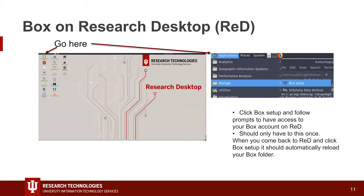Once you get on Research Desktop, you're going to go to Applications in the top left, then down to Storage Box Setup — double-click on that. For the very first time, you're going to have to sign into Box using your IU username and passphrase. But once you do it one time, all you have to do every time you come on is go and do Box Setup. When you double-click it, it will mount to your Research Desktop. You'll have to do it every time, but you won't have to sign into Box again — it'll keep that information. Your Box folder will pop up on the desktop, and you should have access to your Box account and the text analysis folder.